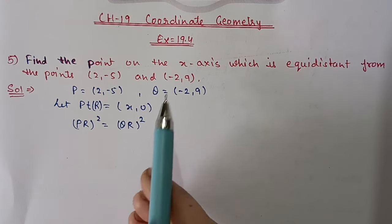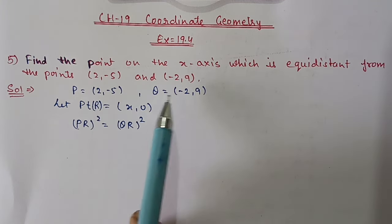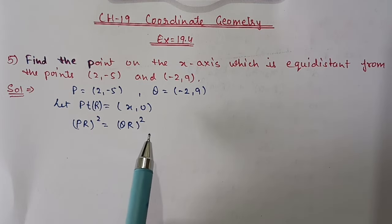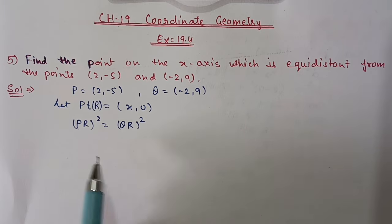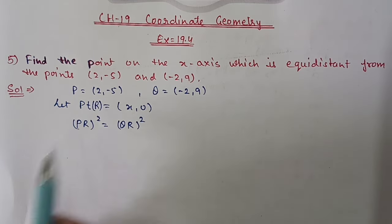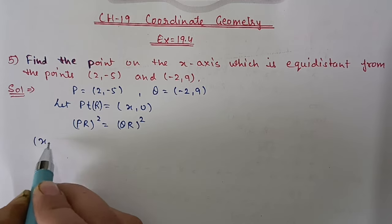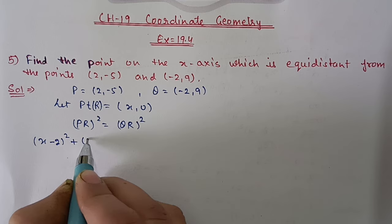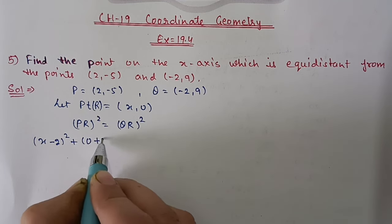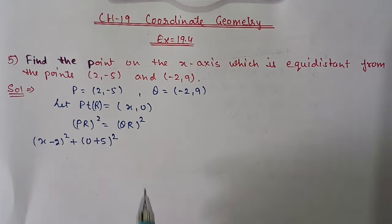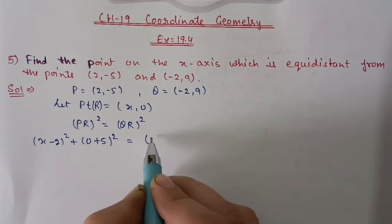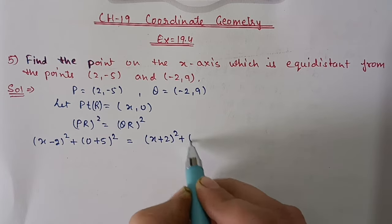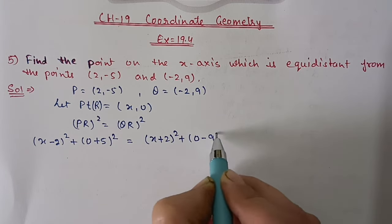This point is equidistant from P and Q, so PR² will be equal to QR². Now we will apply the distance formula. For PR², we take these two points: (x - 2)² + (0 - (-5))², which becomes (x - 2)² + (5)², equal to (x - (-2))² + (0 - 9)², which is (x + 2)² + (-9)².